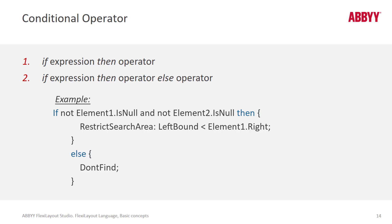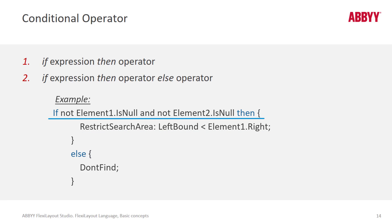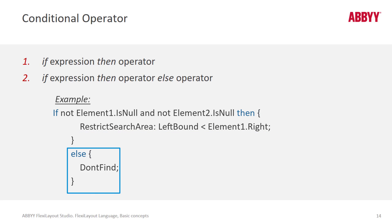We can use if-then conditional operators or if-then-else conditional operators. So in this example, if two of the elements were not found — if element1 and element2 both are not found — then you can execute something here. Otherwise, under the else condition, just don't find anything.